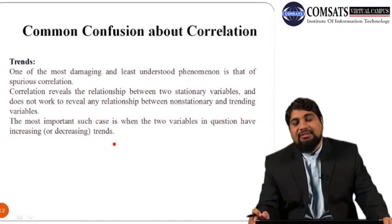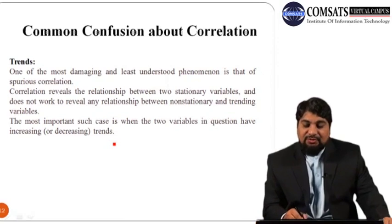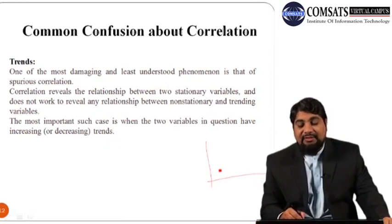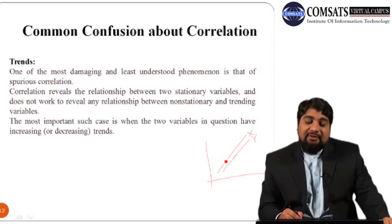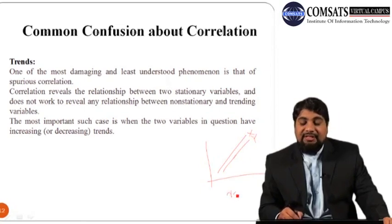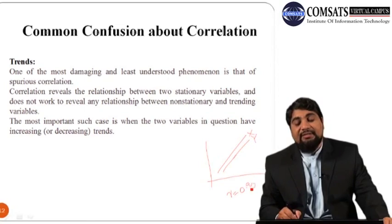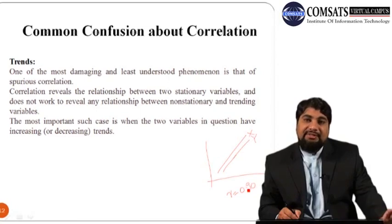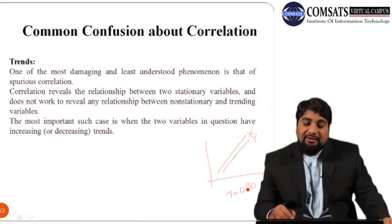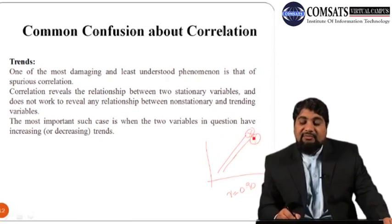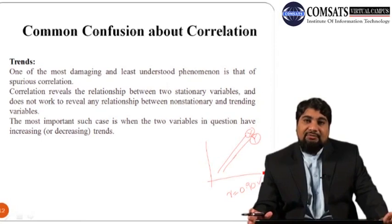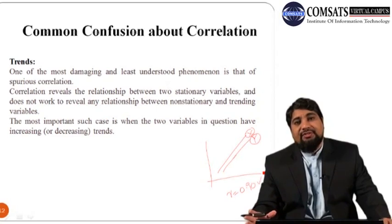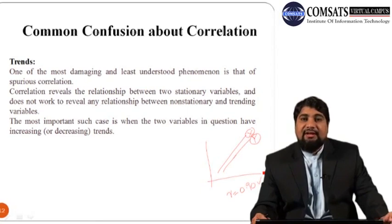If we plot two variables that both have an increasing trend, calculating the correlation between them will show a high value — maybe 90%, 95%, or even 99% — even though the two variables are not actually related. This type of false high correlation is called spurious correlation.